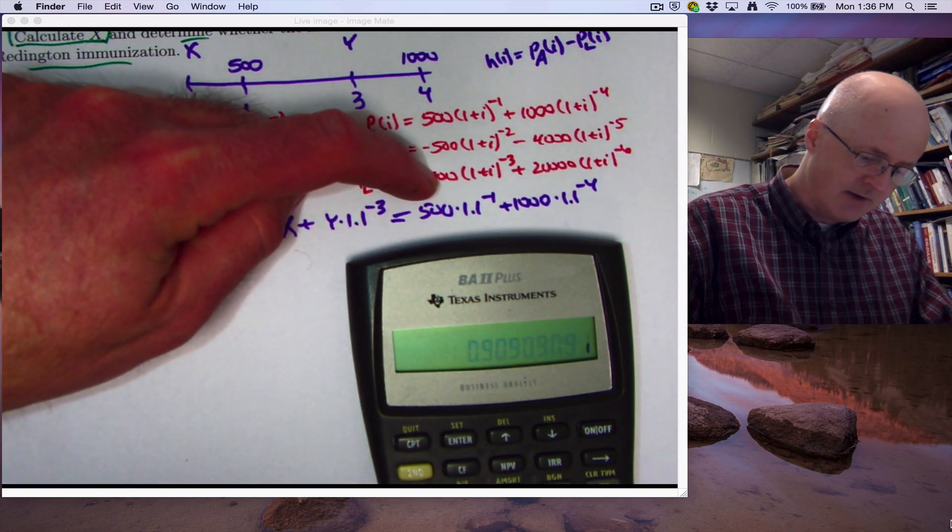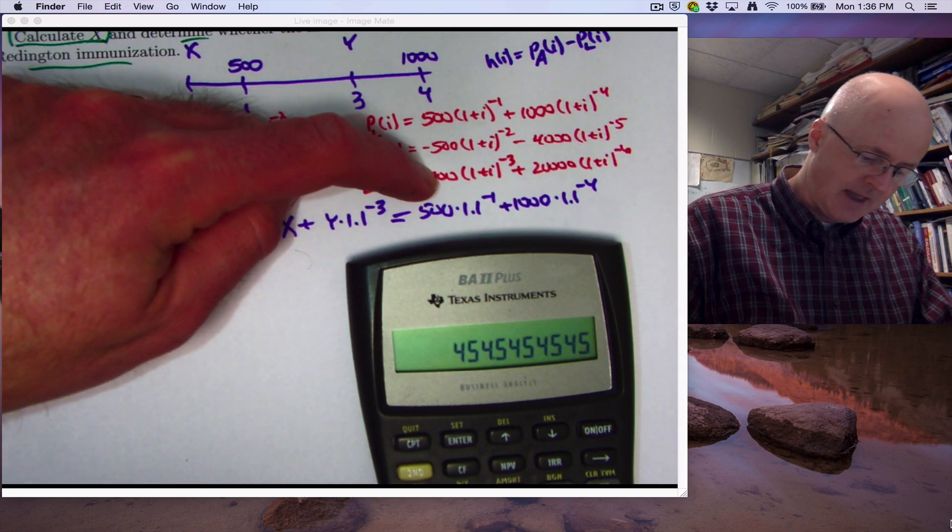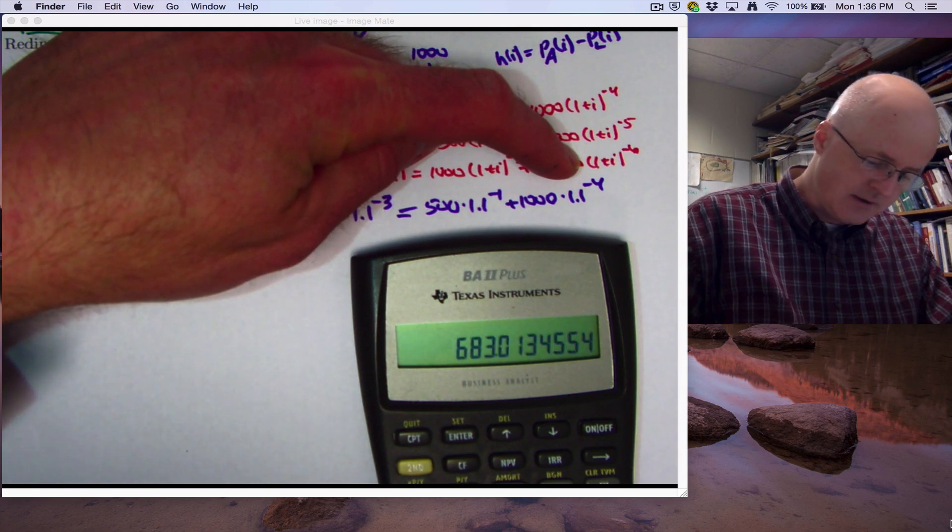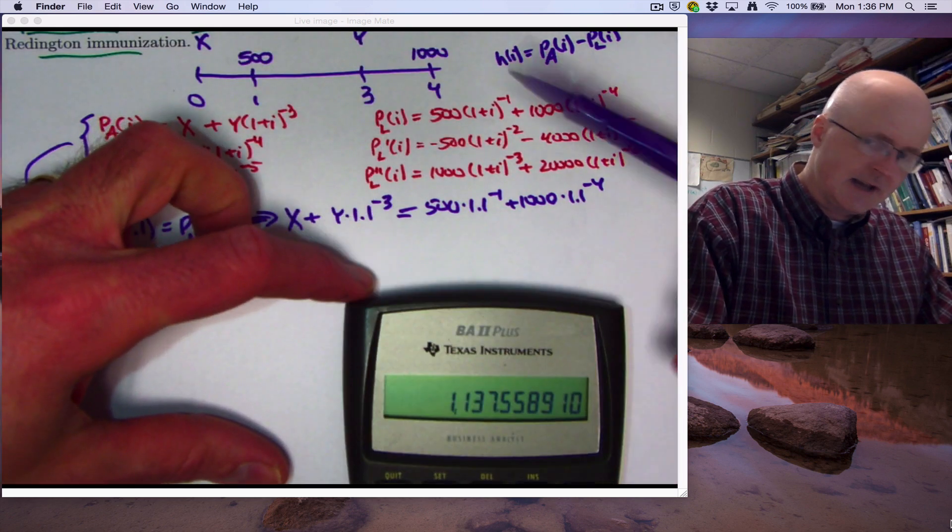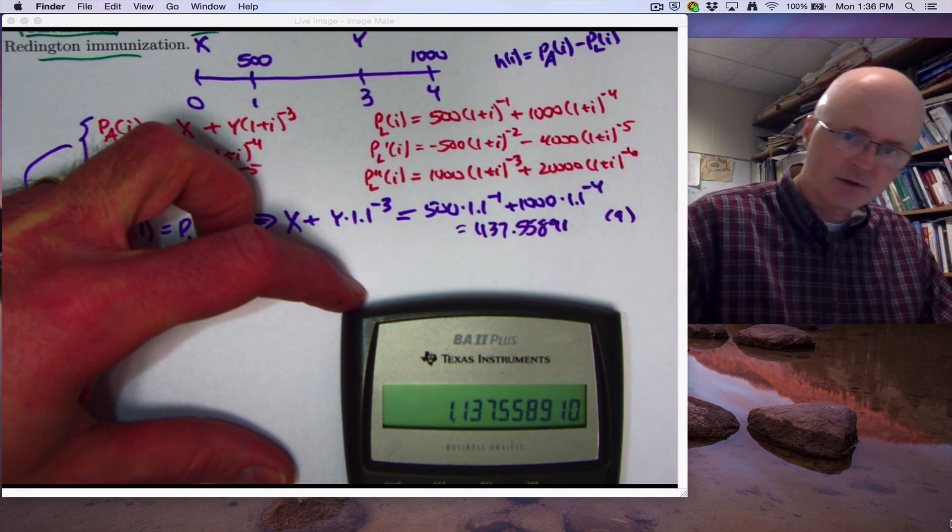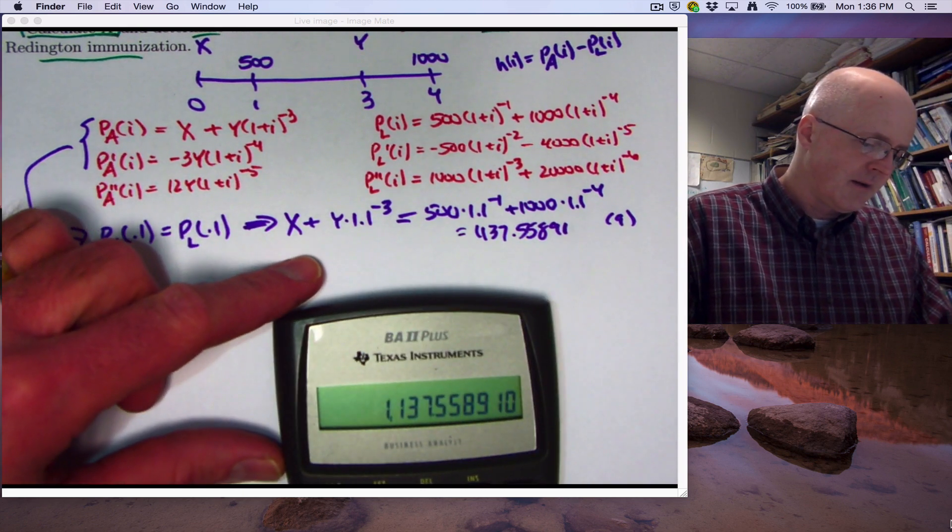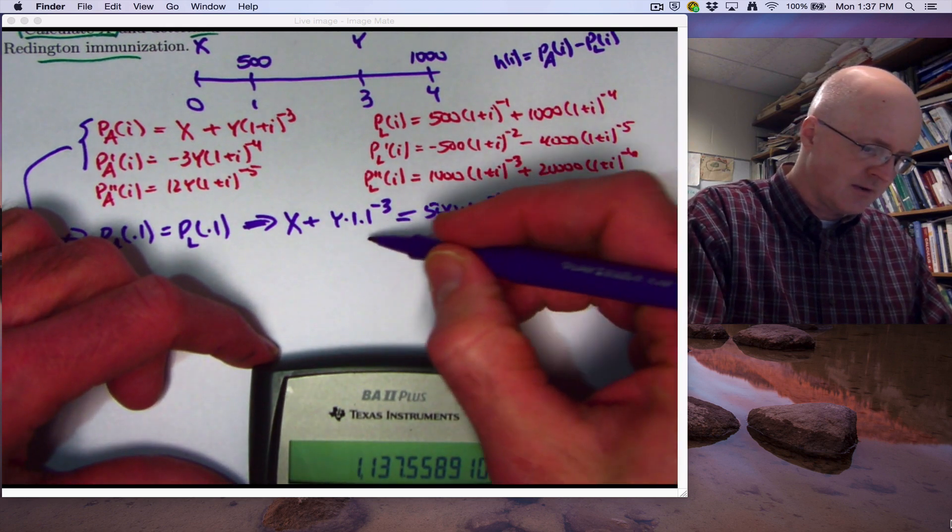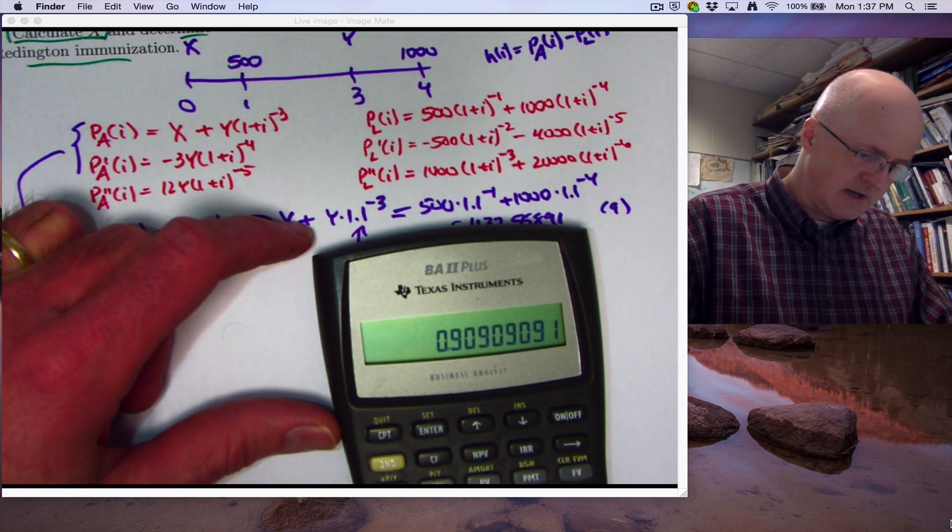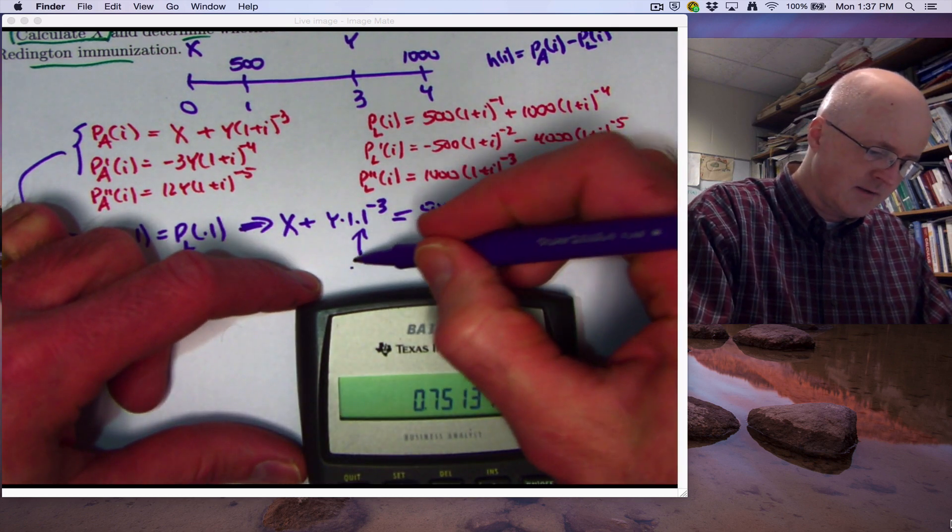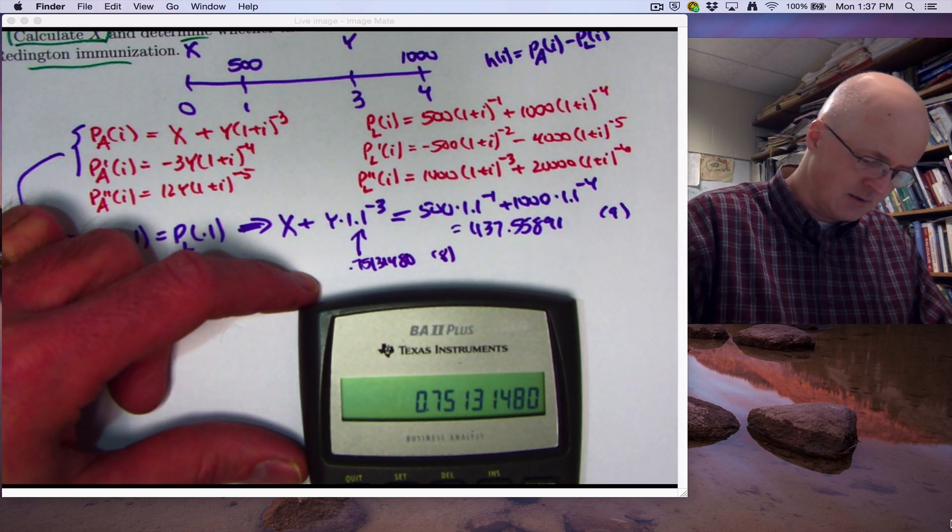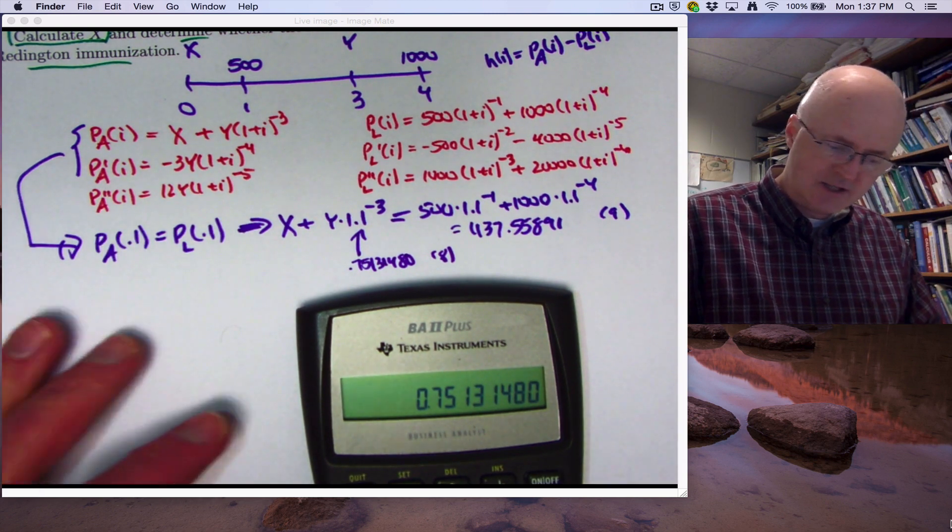There's v. I need to multiply it times 500. I'll store that in register 1. And then also find v to the fourth times 1000. Don't need to store that. Add it to what's in register 1. I see that the right-hand side here becomes 1137.55891. I think I'll store that in register 9. I'll put a little note to myself over here, store that in register 9. I also may want to store the value, that's the coefficient of y there. v to the third power 0.75131480. I'll store that in register 8. So that's my notation to remind myself that that's stored in register 8. Okay, that's good enough for the first equation at the moment.